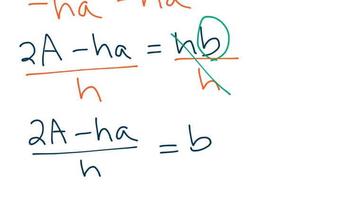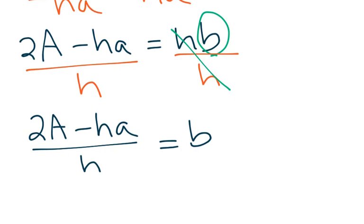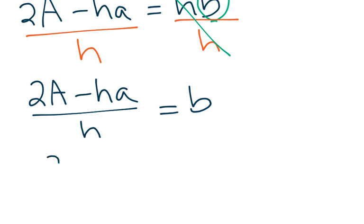You probably notice that these answers look very different, but they're actually the same as what we got before. Because if you were to split this up, you get 2A/h - ha/h on the left-hand side, and you'll see that these h's cancel. So this all still equals b.